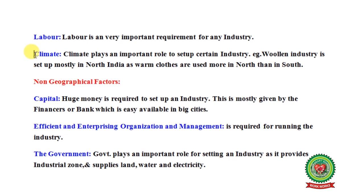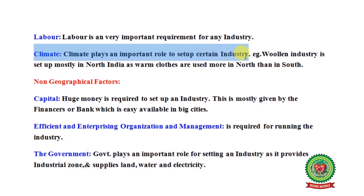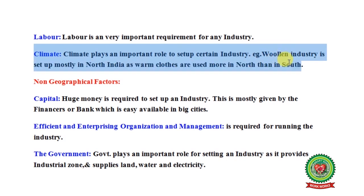Climate plays an important role in setting up certain industries. For example, the woolen industry is set up mostly in north India because warm clothes are used more in the north than in the south. Therefore, all woolen industries are mainly concentrated in the northern part of India, in states like Jammu and Kashmir, Himachal Pradesh, Uttaranchal, and so on.